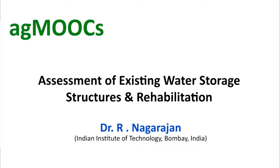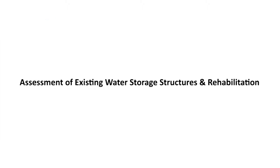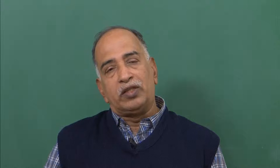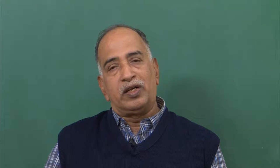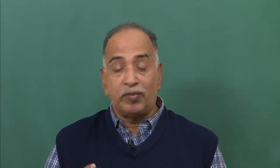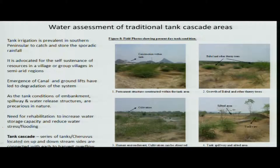In sustainable agriculture, I am from a traditional agriculture land and we have developed our own system. Another probable application of GIS, recordings, and other digital information is about what we do with traditional tanks which are arranged in a cascading manner to improve the solution.